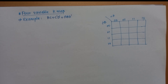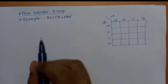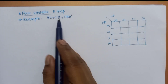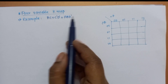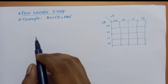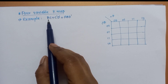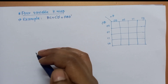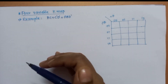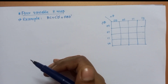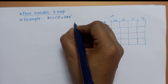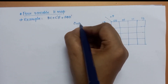Now we have a 4-variable K-map example. The expression is bc plus c-dash d-dash plus abd-dash. We will represent this in the 4-variable K-map. Using the identity a plus a-dash equals 1.